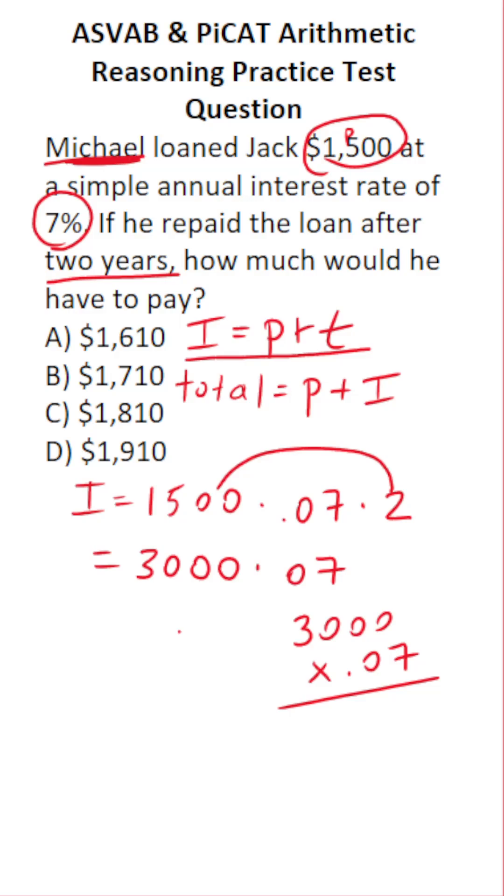We have 3,000 times 0.07. We're multiplying a whole number by a decimal, so move this decimal two times to the right to make this 3,000 times 7, albeit with two decimals to move back to the left. 7 times 0 is 0, 7 times 0, 0, 7 times 0, 0, 7 times 3 is 21. Bring our two decimals back in, 1, 2. So we can see the amount of interest he accrued on that loan is $210.